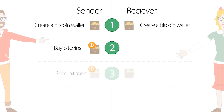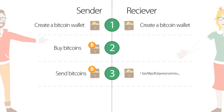Now, once a sender has Bitcoins in his wallet, the Bitcoins are ready to be sent to the receiver's wallet. Before that, the sender needs to know the wallet address of the receiving wallet, which is a long series of letters and numbers specific for each wallet.